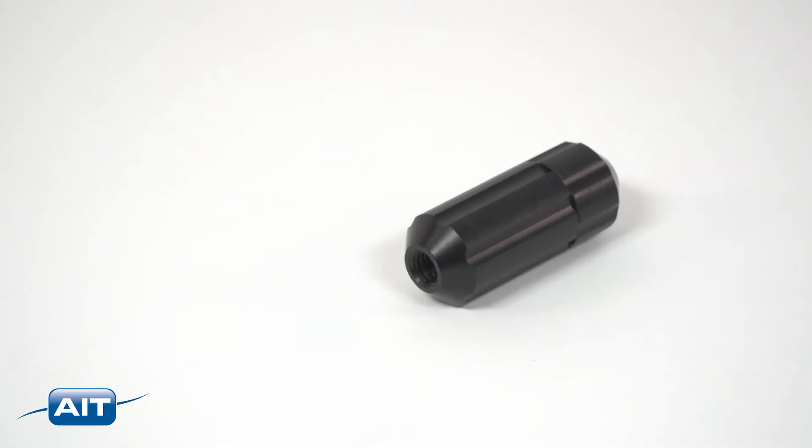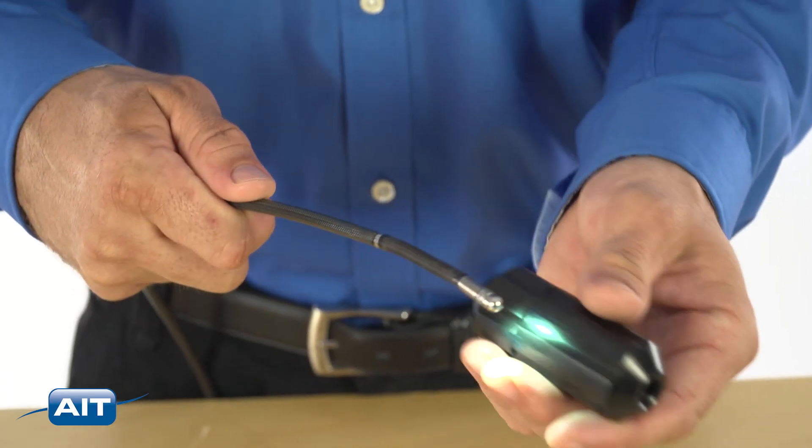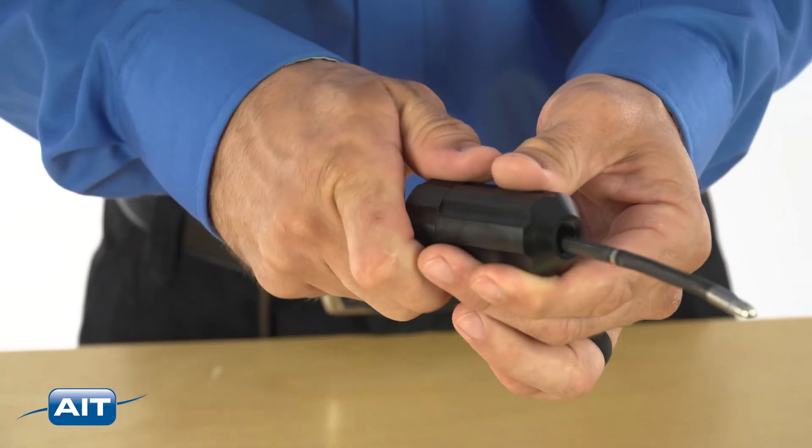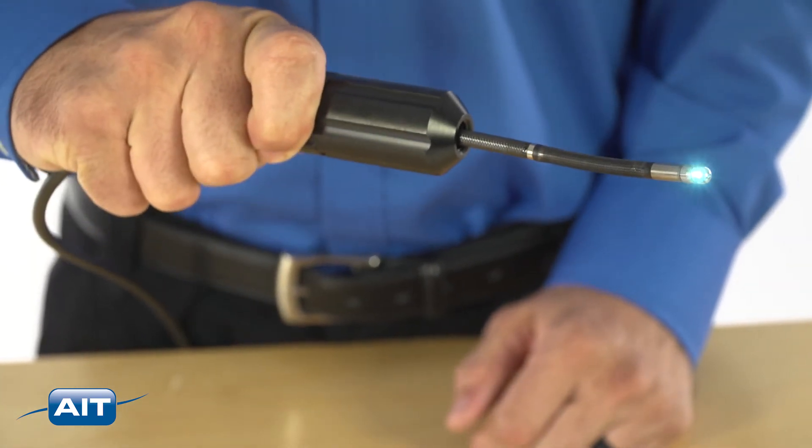The tube gripper can be used to make manipulation of a flexible borescope easier. The tube gripper is commonly used during orbital weld inspections, where an inspector needs to frequently rotate the borescope.